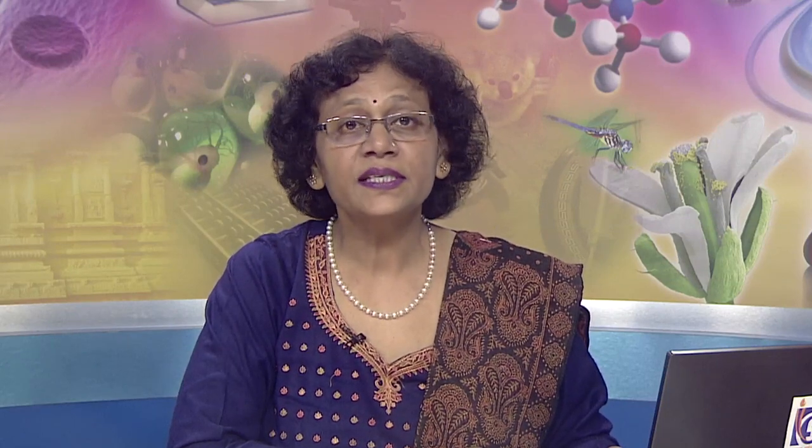There are two types of resistors. Carbon resistors: This is basically carbon matter which, along with a suitable binding agent, is molded into a cylinder, and you attach leads to it to connect this to any circuit.